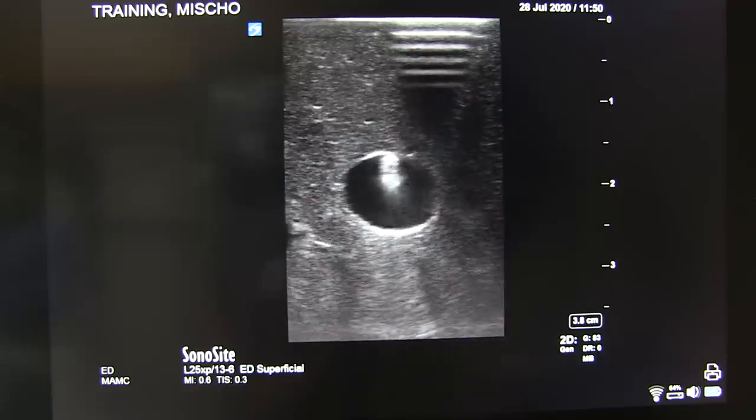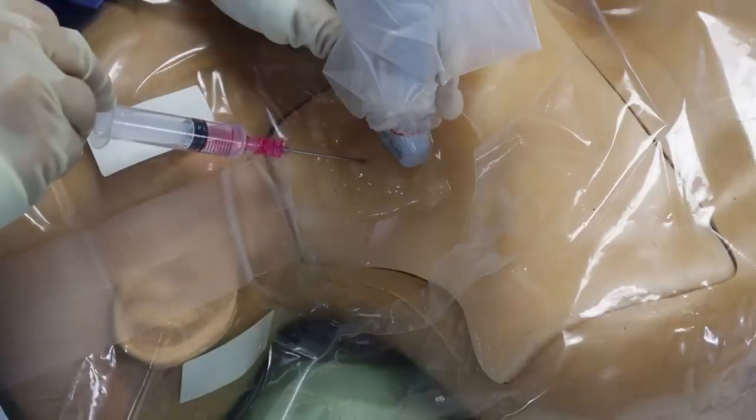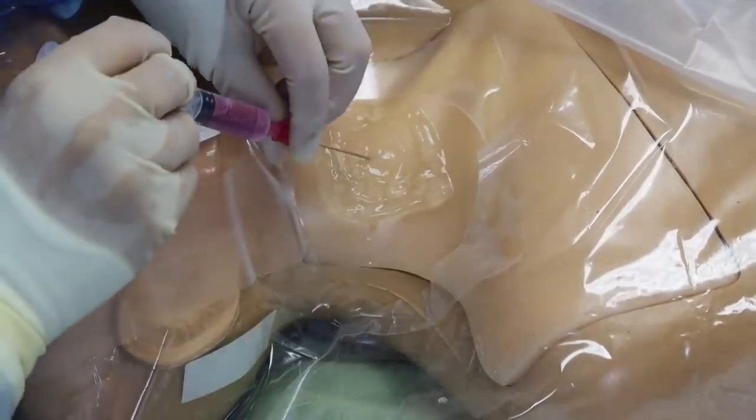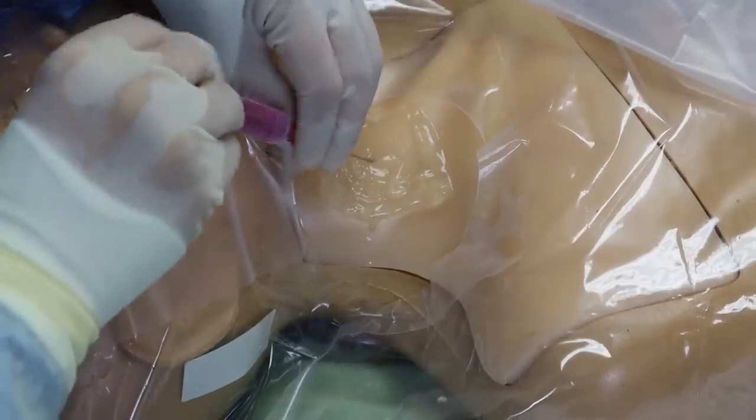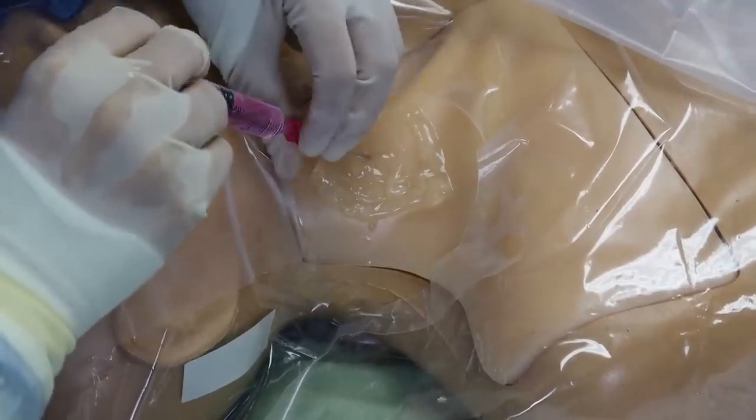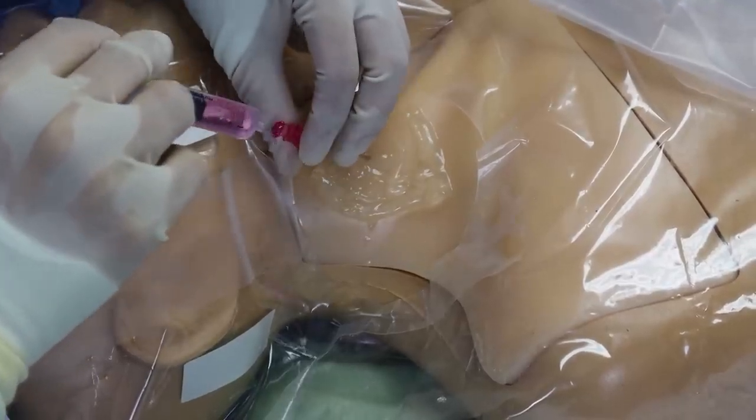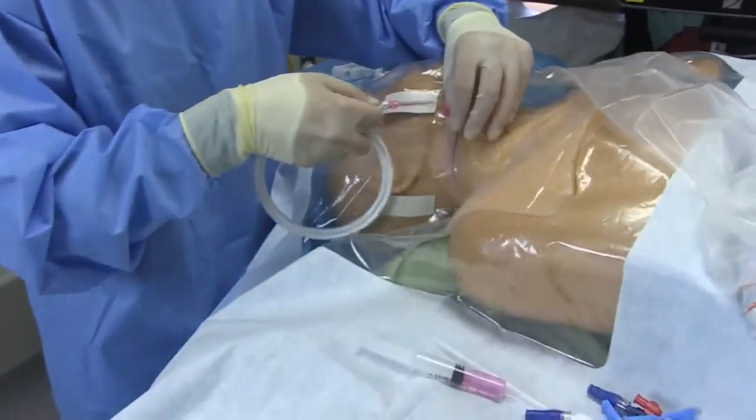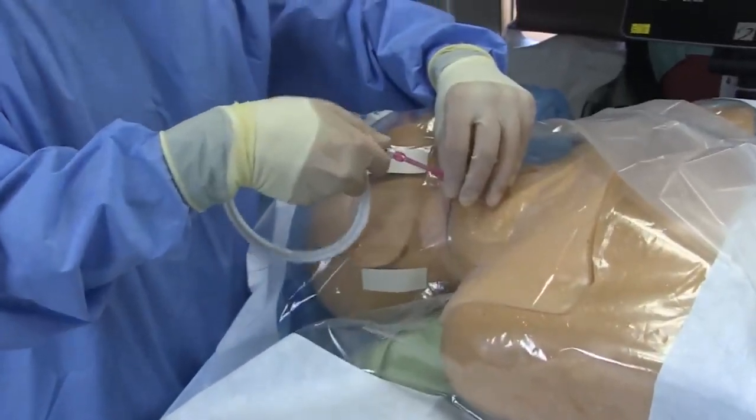Once the needle is in the lumen of the jugular and you are able to draw back venous blood, very carefully remove the syringe from the finder needle. Stabilize that needle while you're doing this. Don't let it move. If you're using the compass pressure transducer, you can feed a wire through it so you don't have to remove the syringe.